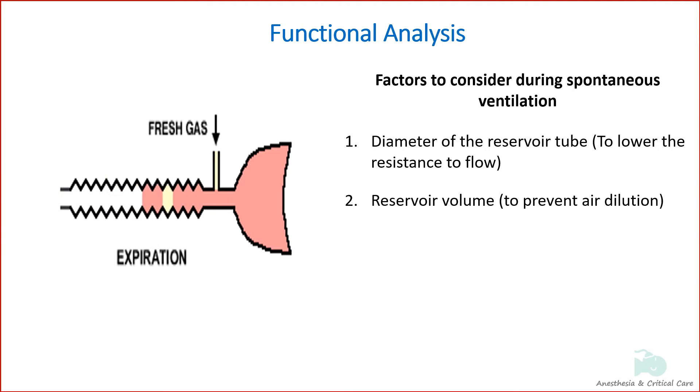Second, volume of the reservoir limb or tube should not be less than the patient's tidal volume. If the reservoir volume is equal to tidal volume, the fresh gas flow should be equal to 2.5 times minute ventilation to prevent air dilution.